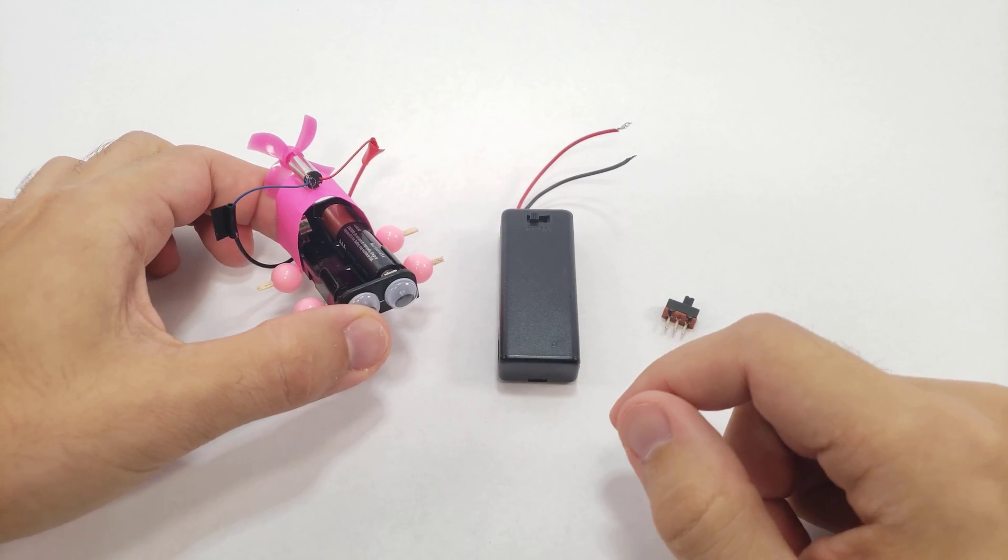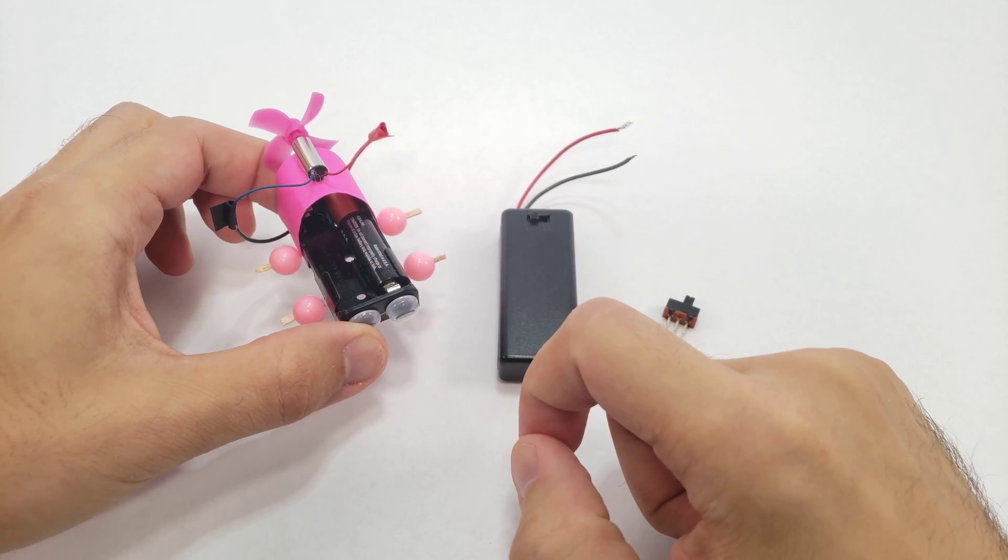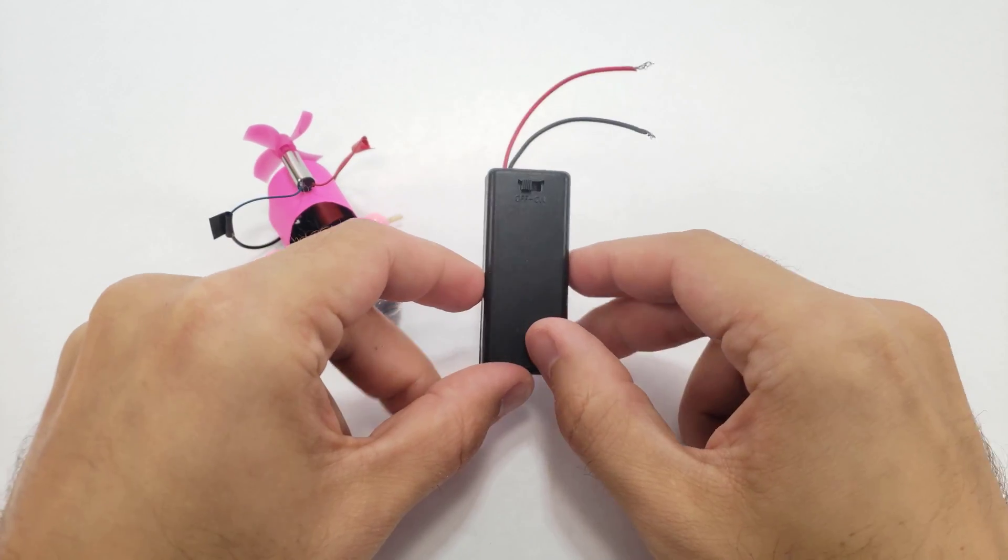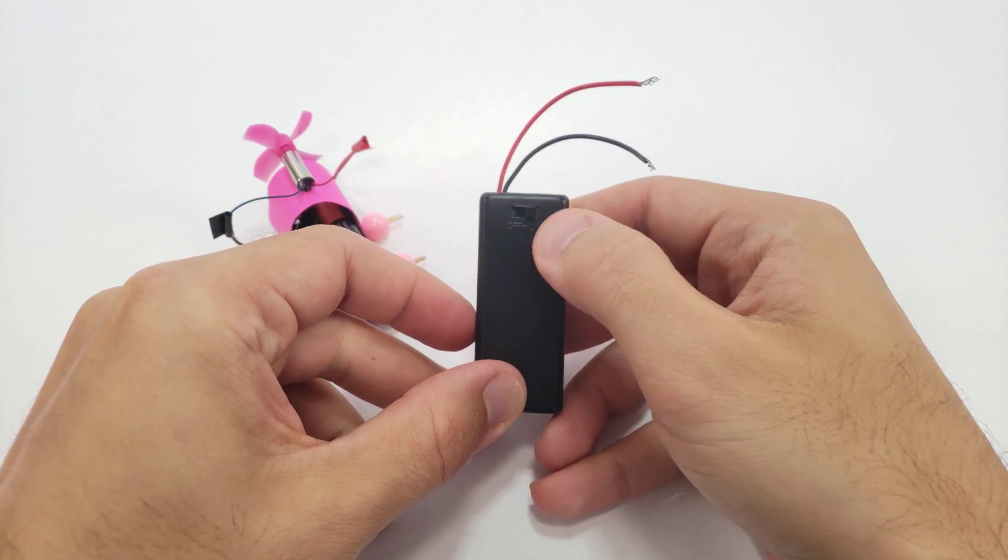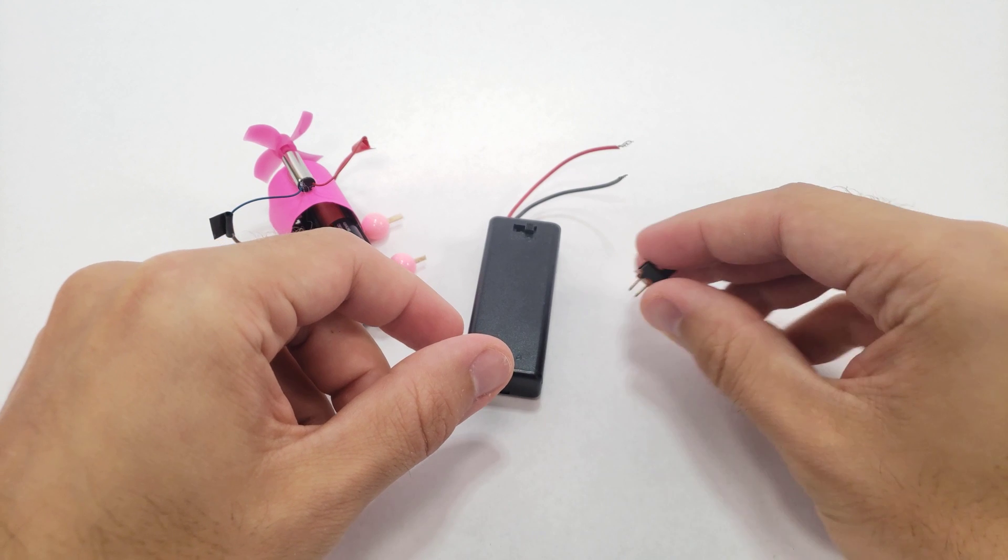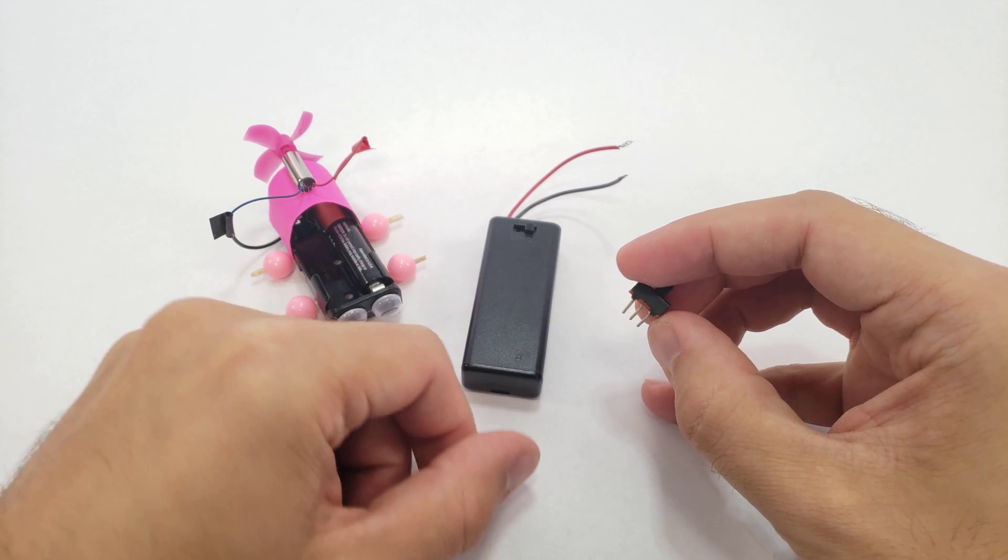Or maybe you don't like the design of the car. For example, you could find it annoying to remove the battery to turn it on and off. You could use a battery pack with a built-in switch instead, or if you have a soldering iron, add a separate power switch to your circuit.